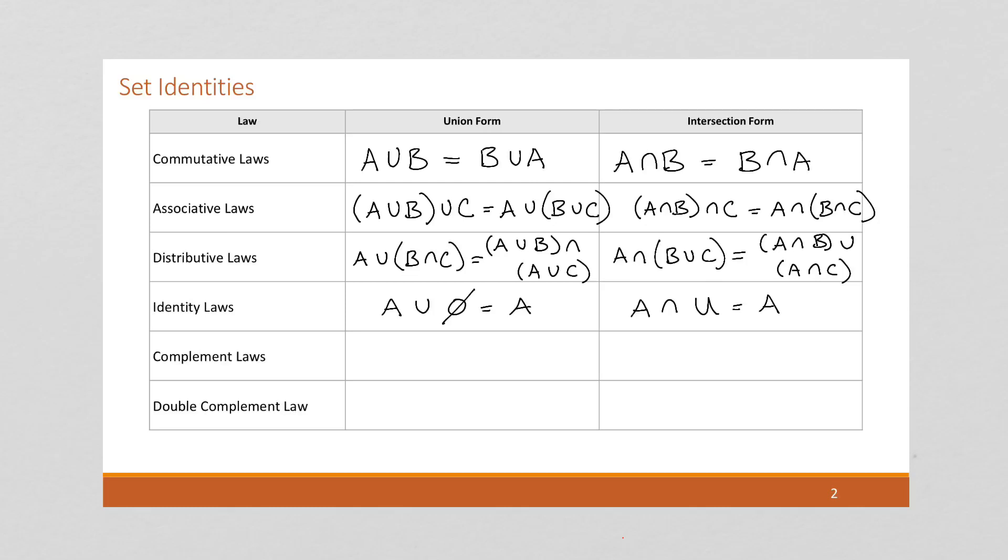Complement laws are very similar to the negation laws in Boolean algebra. If I union a set with its complement, I'm going to get the universe, because the set A is unioned with everything that's not in the set A. So we have everything. Similarly, if we try to intersect the set A with its complement, we're going to have nothing because there's no overlap. Here, just like the double negation, if we take the complement of A, which is everything except for A, and we take that complement, what we're going to be left with is A. And there's no union form. There's only one form here.